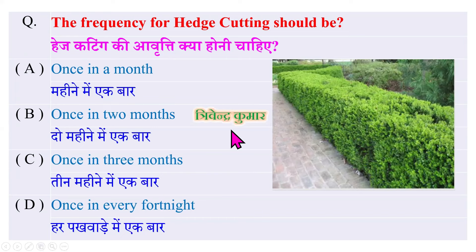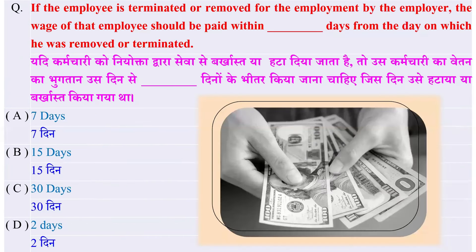If an employee is terminated or removed from employment by the employer, the wage of that employee should be paid within how many days from the day on which he was removed or terminated? यदि किसी कर्मचारी को नियोक्ता द्वारा सेवा से बरखास्त या हटा दिया जाता है, तो उस कर्मचारी को वेतन का भुगतान उस दिन से कितने दिनों के भीतर किया जाना चाहिए? Options: 7 दिन, 15 दिन, 30 दिन, या 2 दिन — और सही जवाब है 2 दिन।